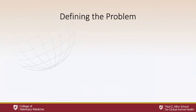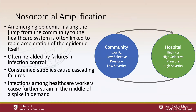The first thing I'd like to do is define the problem of nosocomial amplification — an emergent epidemic making the jump from the community to the healthcare system, and how that's often associated with a rapid acceleration of the epidemic itself, a sharp increase in the number of cases, and the beginning of system-level breakdowns. This is often heralded by failures in infection control, either errors in contact precautions, not recognizing that an infection requires them, or constrained supplies that cause cascading system failures. Infections among healthcare workers cause further strain in the middle of a spike in demand for healthcare workers, creating a negative feedback loop.